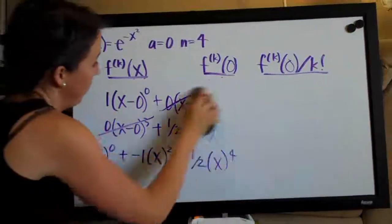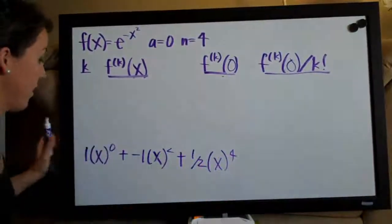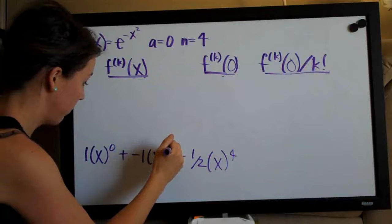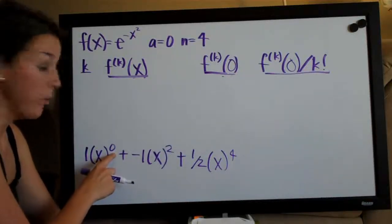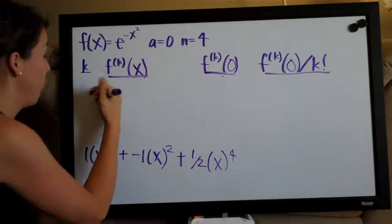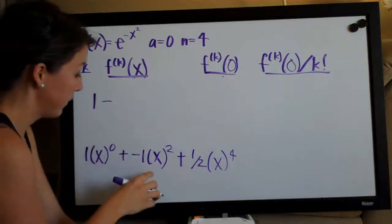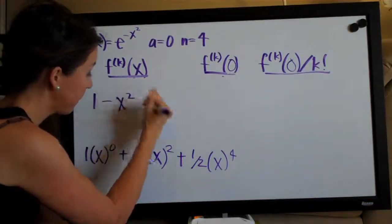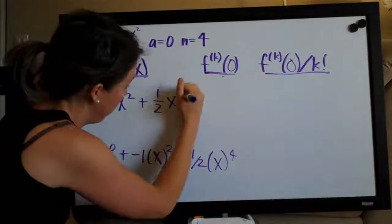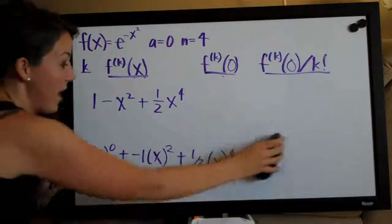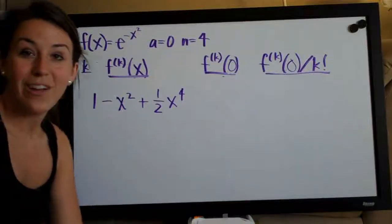So, then let's go ahead and simplify one more time. That'll be our final answer. Anything, again, raised to the zero power is just one. So, x to the zero is one. So, we have one out in front here. Then this is plus a minus. We have minus x squared. And, then this is plus one half x to the fourth. And, that, finally, after all those steps and all that work, is our final answer.